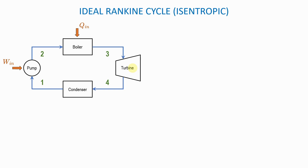As the shaft of the turbine is rotating, that is mechanical energy, and if you have a generator you can convert that mechanical energy into electricity. At the turbine, because it is the steam that is doing work on the turbine, work is leaving the steam — that is why at the turbine we say there is work going out. The work is going from the steam to the turbine, causing it to rotate, so we have W-out at the turbine.